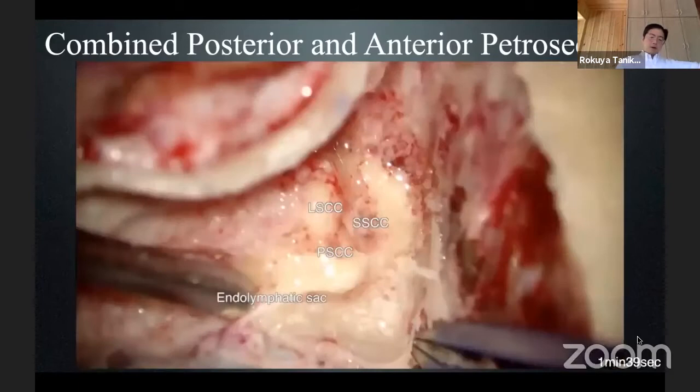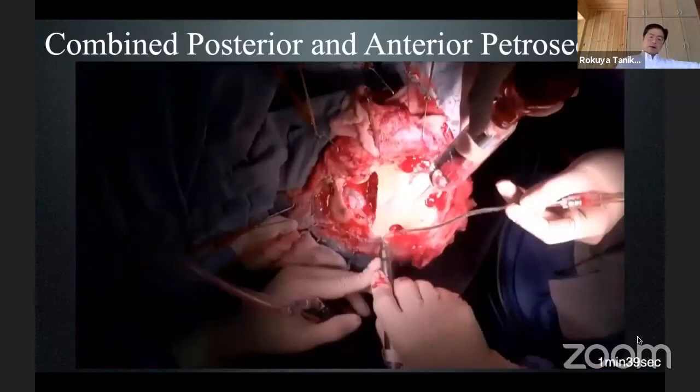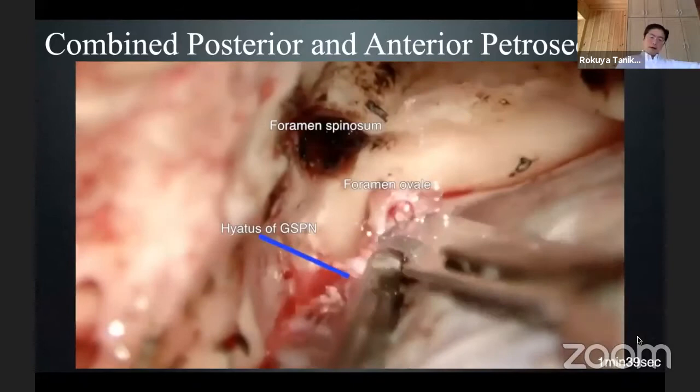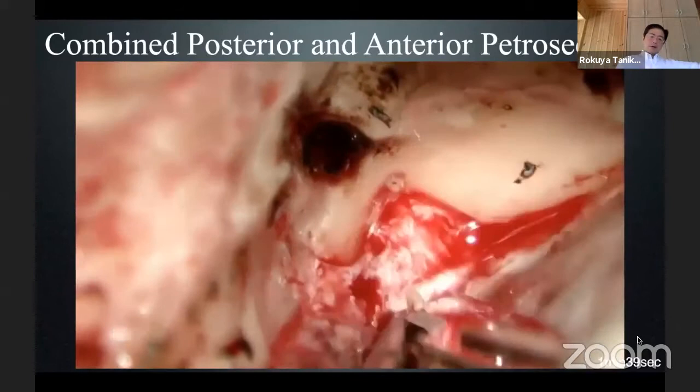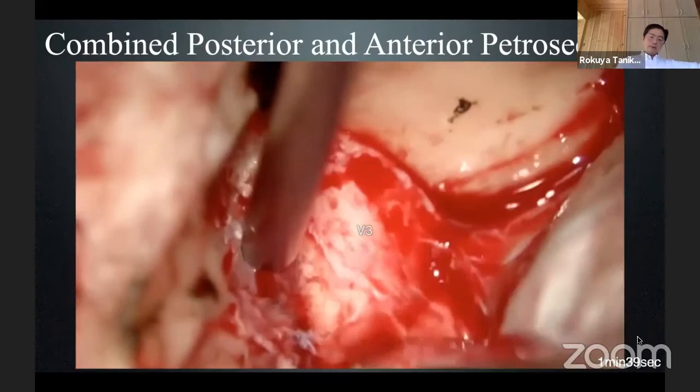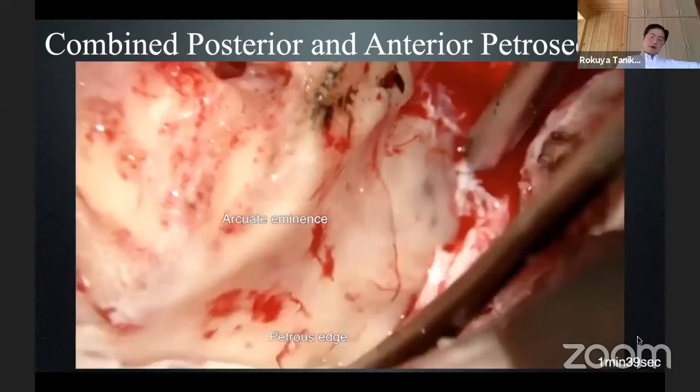The lateral and posterior semicircular canals are exposed, and the posterior endolymphatic sac is exposed. At this moment, a craniotomy is added. This is a subtemporal approach to the middle fossa. This is the petrous apex, and the GSPN is dissected. You can see venous oozing from the cavernous sinus — this bleeding must be completely stopped.